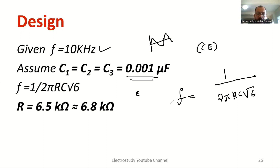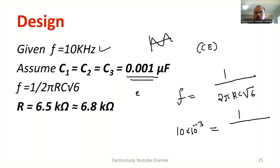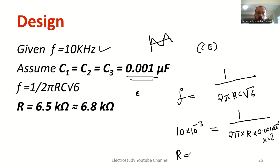Now substitute the values. Frequency = 10 × 10⁻³ Hz equals 1 divided by 2π × R × C, where C = 0.001 × 10⁻⁶, multiplied by √6. From this, calculate the value of R. The value of R will be approximately 6.5 kilo-ohm. But 6.5 kilo-ohm is not available in the market, so you can approximate to the nearest standard resistor, which is 6 kilo-ohm.